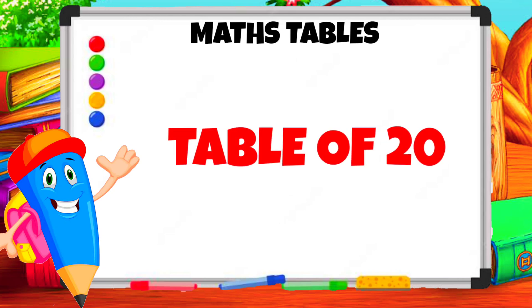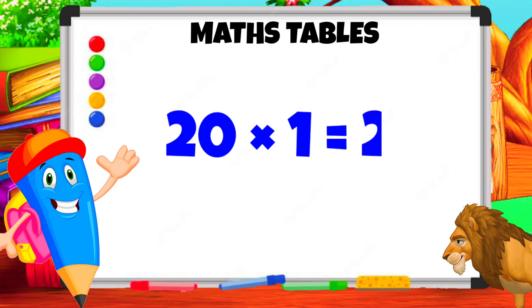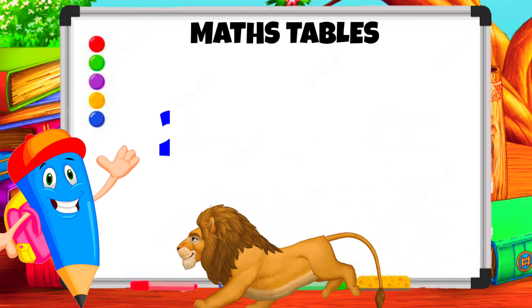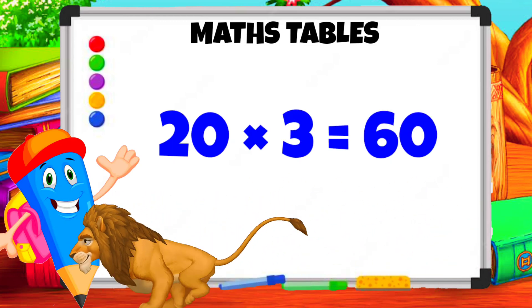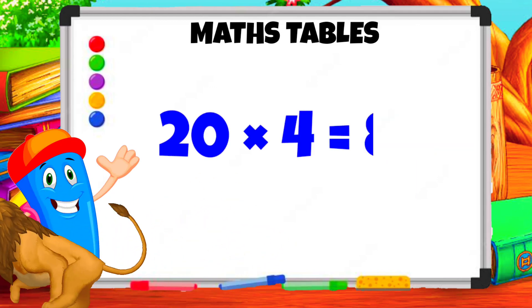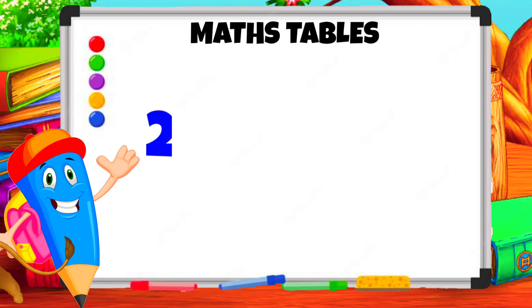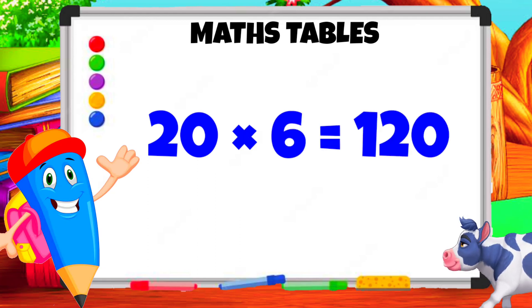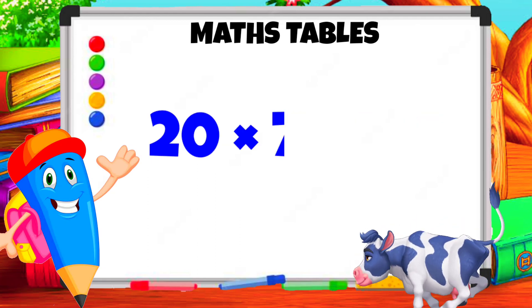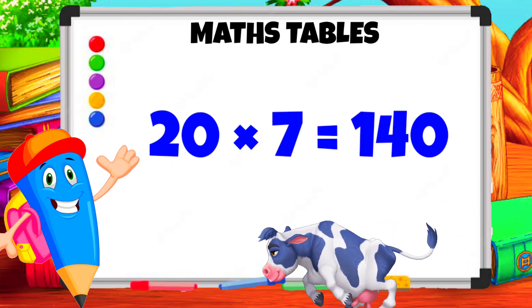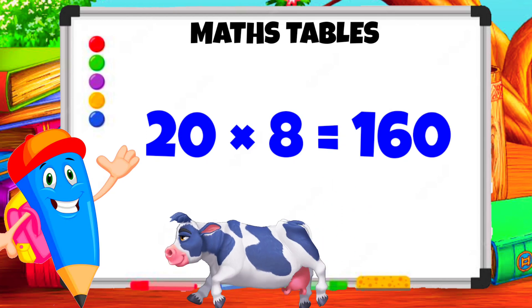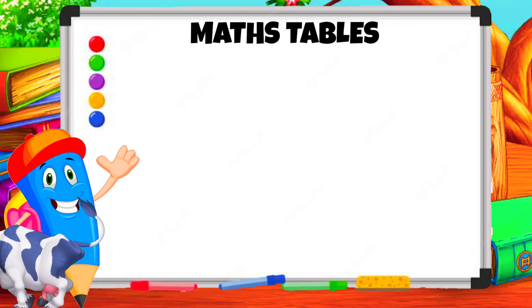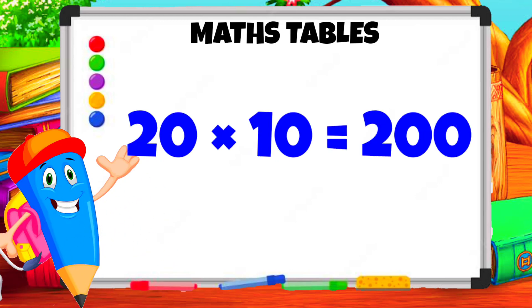Table of Twenty. 20 1s are 20. 20 2s are 40. 20 3s are 60. 20 4s are 80. 20 5s are 100. 20 6s are 120. 20 7s are 140. 20 8s are 160. 20 9s are 180. 20 10s are 200.